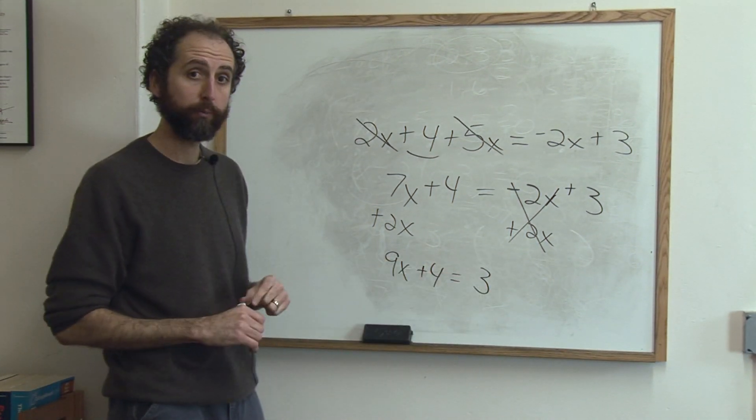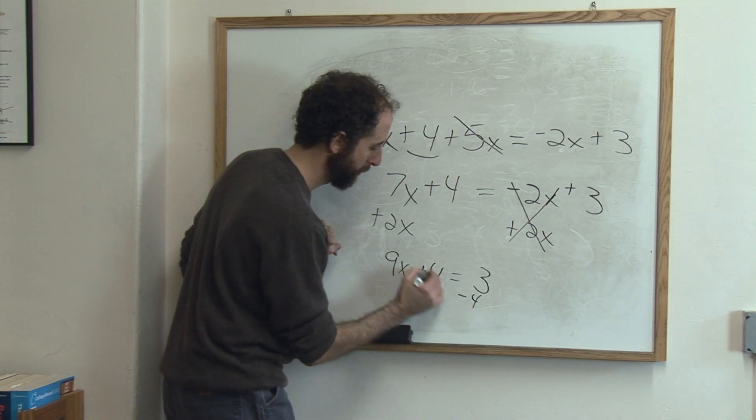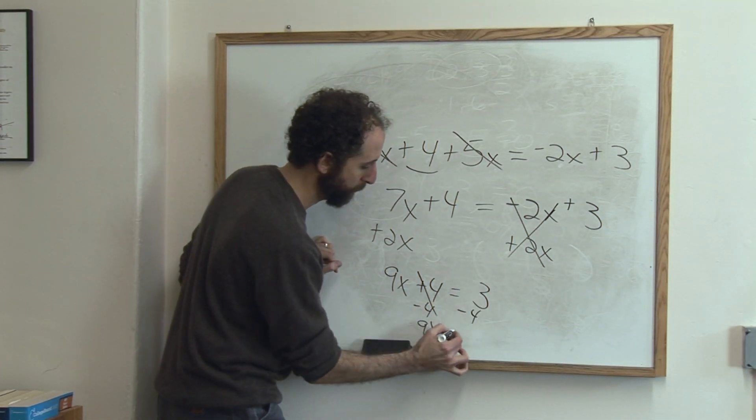Now we want to move the 4 to here. We want to get just x's on here and just numbers there. We'll subtract 4 from both sides. Cancel. 9x equals 3 minus 4 is negative 1.